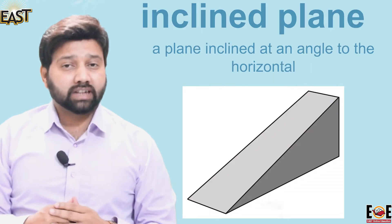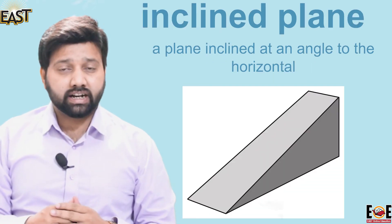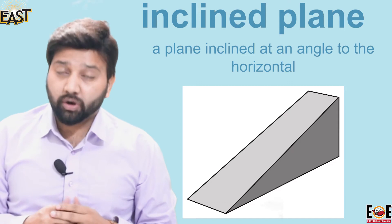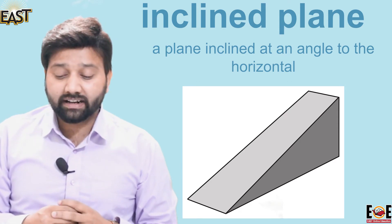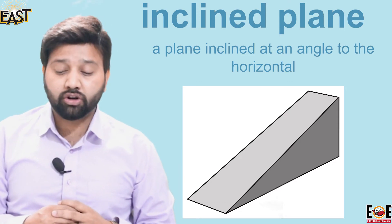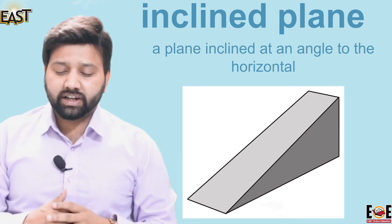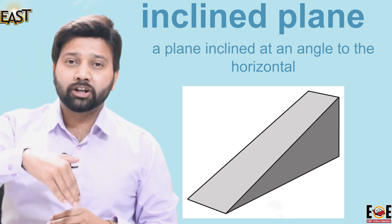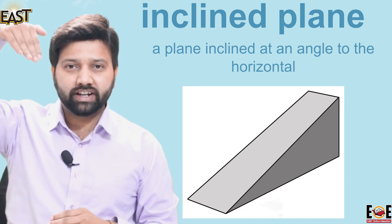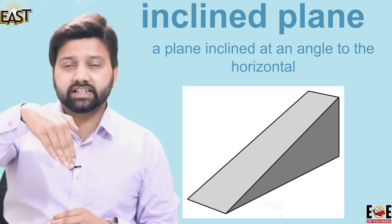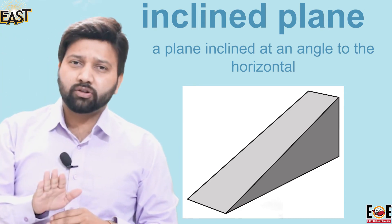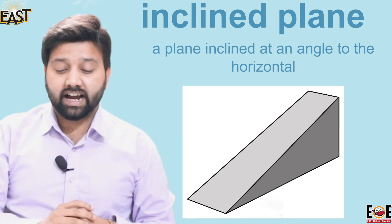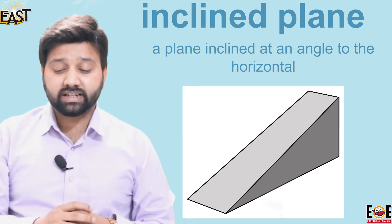Now our third terminology is inclined plane. So what is inclined plane? A plane inclined at an angle to the horizontal. For example, just like a slide — that is an inclined plane. There is also a ramp that goes above a car, and that is also called an inclined plane.